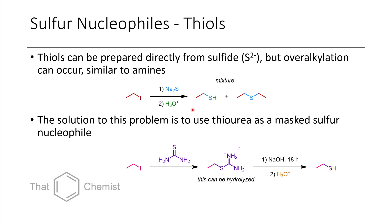Like the phthalimide strategy, if we use a different masked sulfur nucleophile — in this case thiourea — the sulfur can attack and displace the iodide, then we can hydrolyze off the urea byproduct. Treating with acid affords the thiol. Thiourea is also a really nucleophilic sulfur source, so this reaction works relatively well. You could also isolate these salts most of the time because they're positively charged — in a polar aprotic solvent they will usually precipitate out.